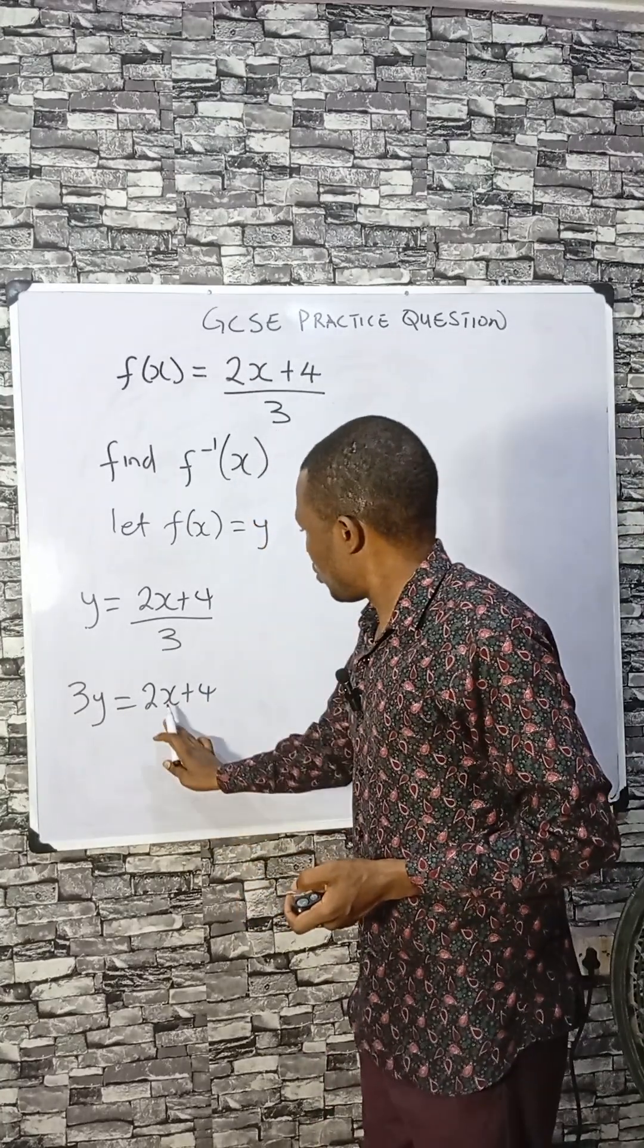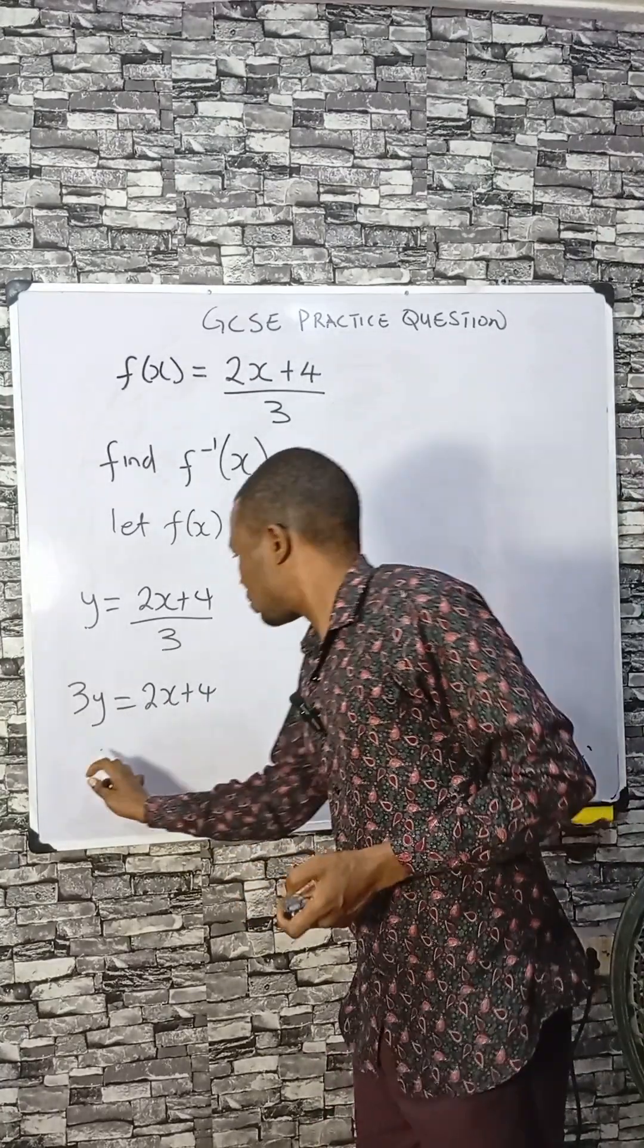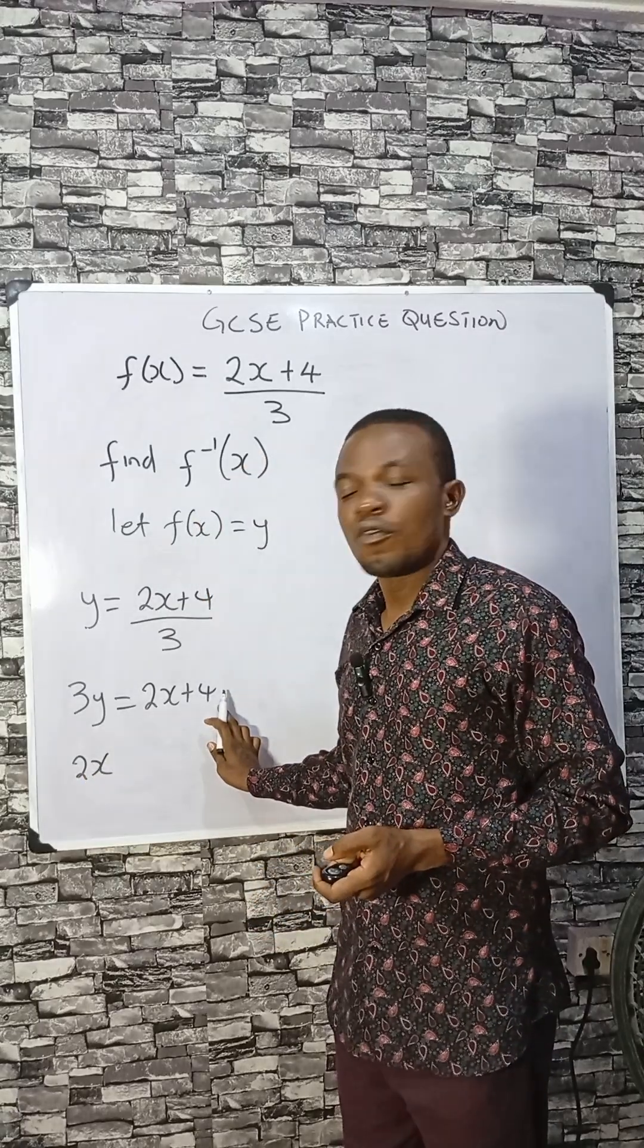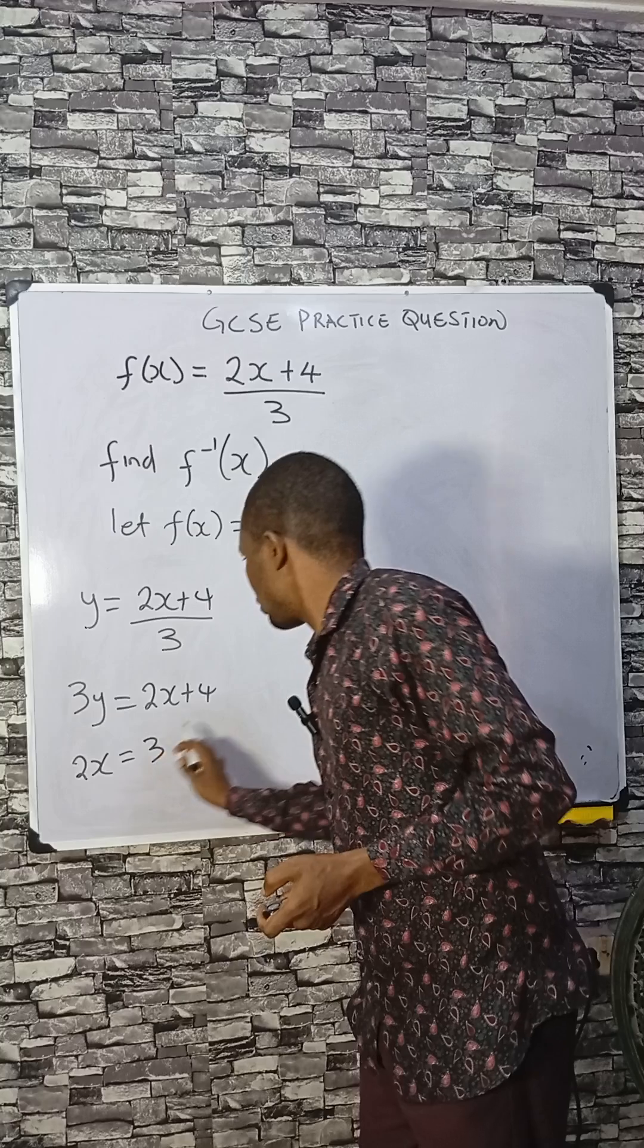Make 2x the subject by subtracting 4 from both sides. That would be 3y minus 4.